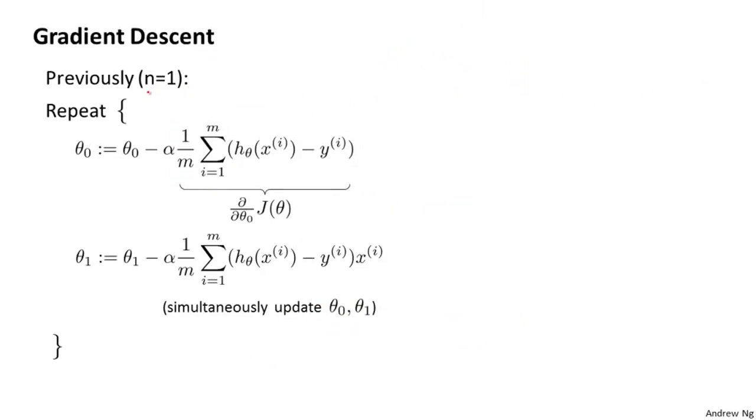Here's what we have for gradient descent for the case when we had n equals 1 feature. We had two separate update rules for the parameters theta 0 and theta 1, and hopefully these look familiar to you. This term here was of course the partial derivative of the cost function with respect to the parameter theta 0. Similarly, we had a different update rule for the parameter theta 1. There's one little difference, which was that when we previously had only one feature, we would call that feature xi. But now in our new notation, we would call this xi subscript 1 to denote our one feature.